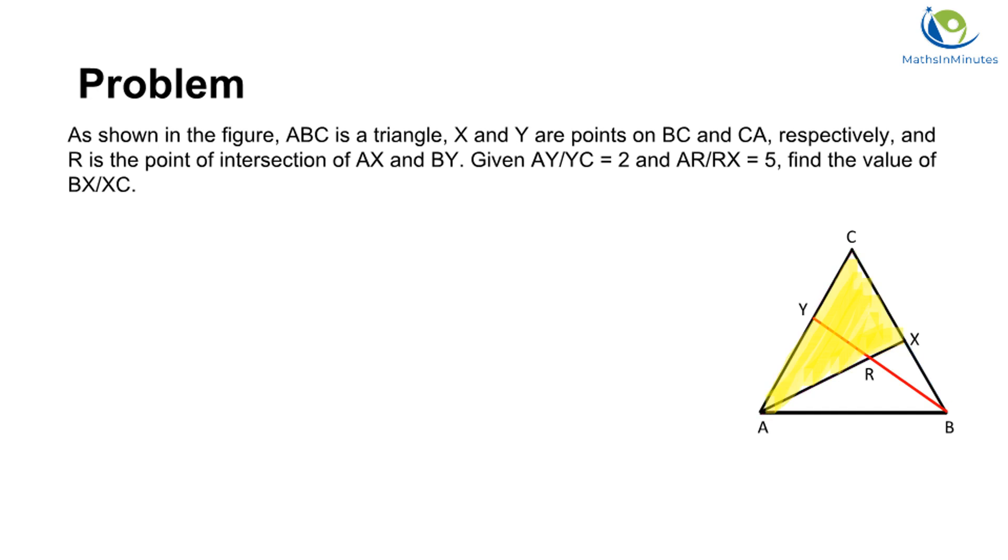To use Menelaus Theorem, we first need to determine which one is the target triangle and which line is the transversal line. From the locations of the 6 segments, we can know that the target triangle is triangle CAX and the transversal line is line BY.